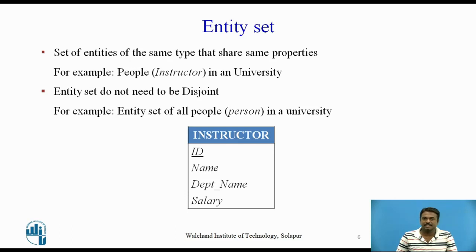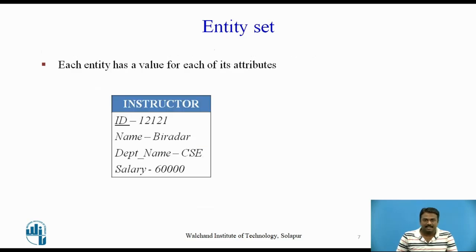An entity is represented by a set of attributes. Possible attributes of the instructor entity set are ID, name, department name, and salary. Each entity has a value for each of its attributes. For instance, a particular instructor entity may have the value 12121 for ID, the value Wu for name, the value Computer Science for department name, and the value 60000 for salary.